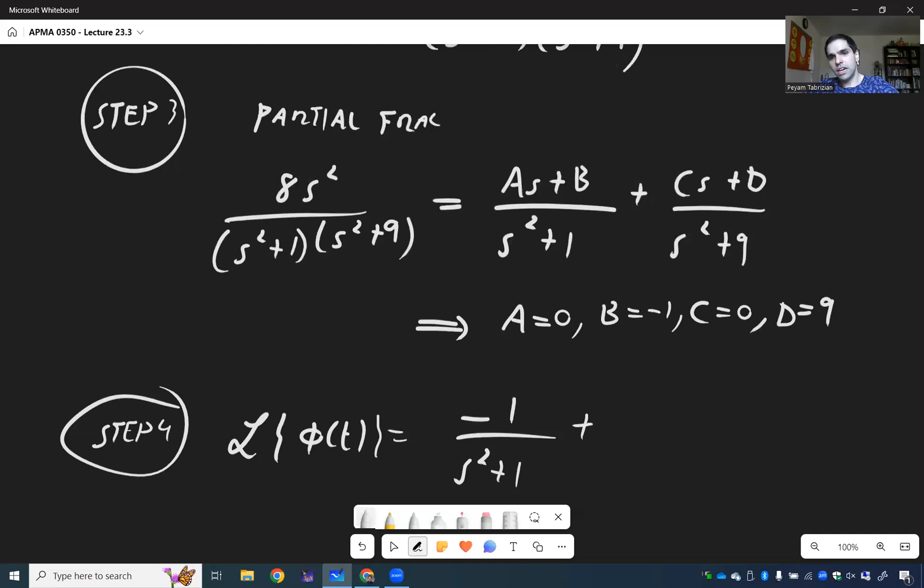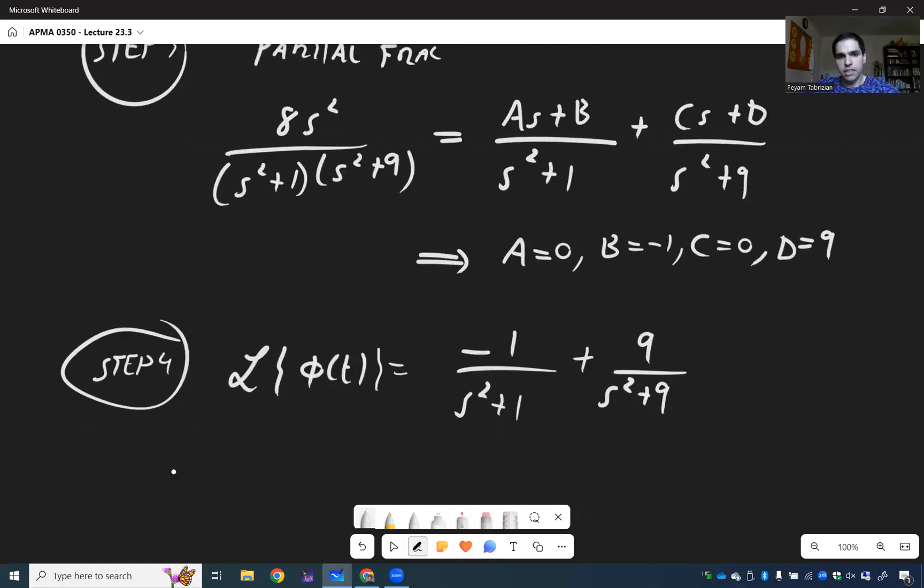And then 0s + 9, 9/(s² + 9). And you will eventually get Laplace of -sin(t). And then 3 times 3 is 9, plus 3 sin(3t).